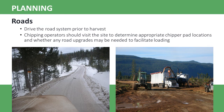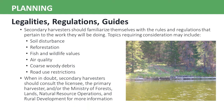Secondary harvesters should familiarize themselves with the road systems of potential worksites prior to harvest. Identifying steep road sections and road upgrade issues can make the difference between an economic and uneconomic operation. Roadside chipping operators should make sure there is adequate space to operate their chipper, and all operators should make sure there is adequate turnaround space for their chip fans. Secondary harvesters should understand that they are required to adhere to the same rules and regulations as primary harvesters. When in doubt, secondary harvesters should consult the licensee, the primary harvester, and/or the Ministry of Forests, Lands, Natural Resource Operations, and Rural Development for more information.